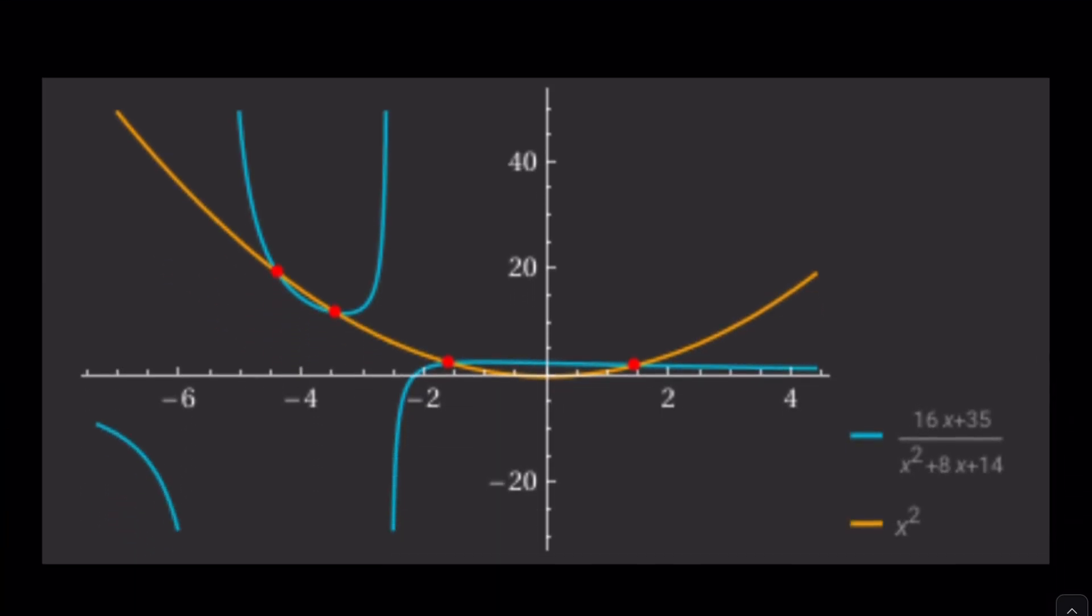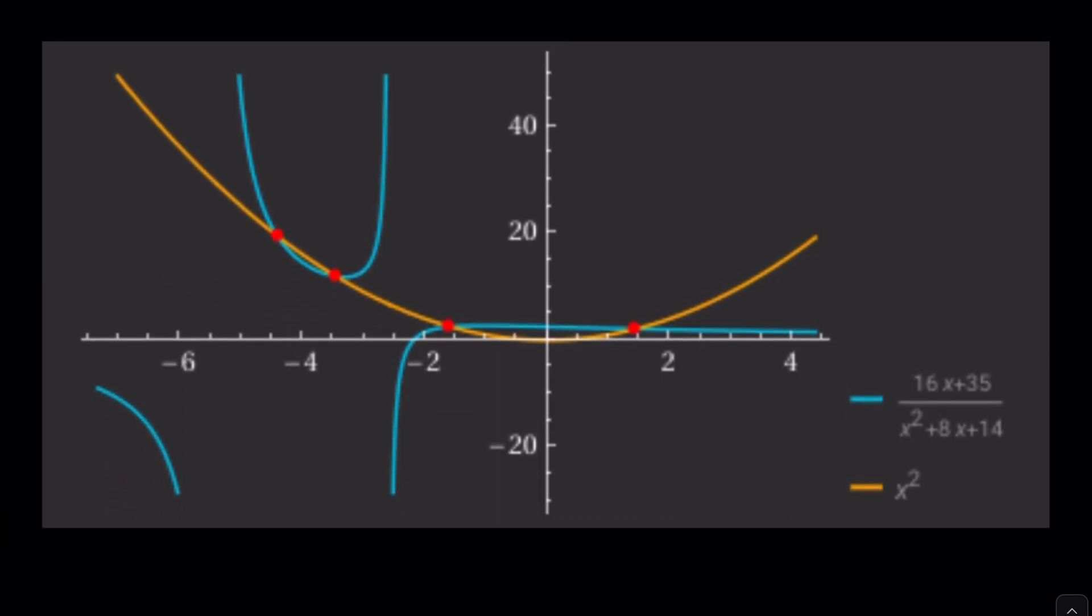And now let's go ahead and take a look at something from Wolfram Alpha. Here we go, the graph of these two functions, and they intersect at four points. There are four real solutions—a rational function intersected by a parabola. And this brings us to the end of this video. Thank you for watching, I hope you enjoyed it. Please let me know, don't forget to comment, like, and subscribe. I'll see you next time with another video. Until then, be safe, take care, and bye bye bye.